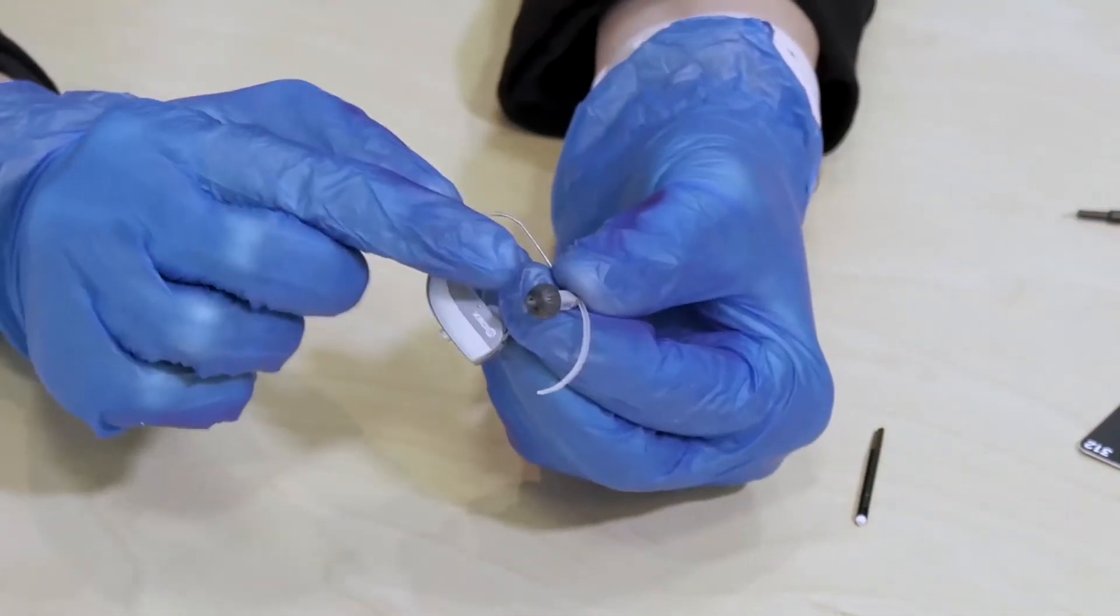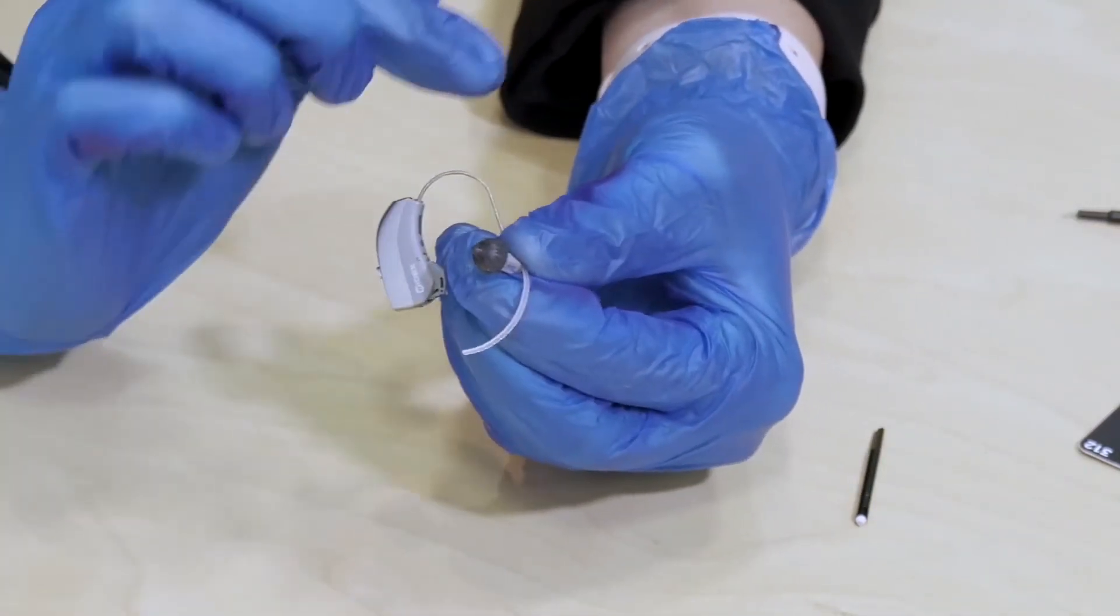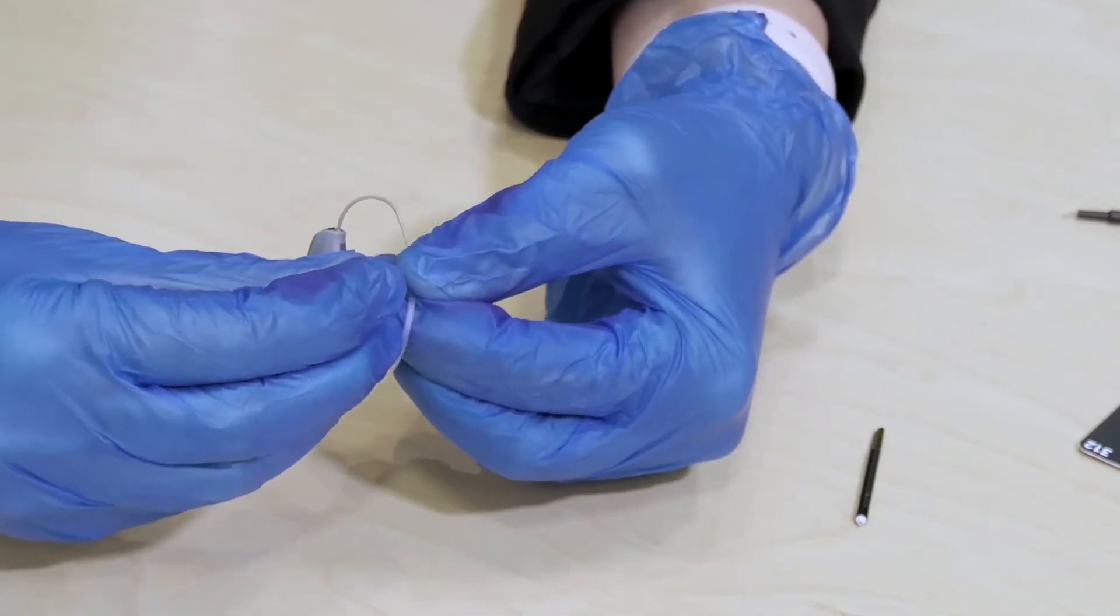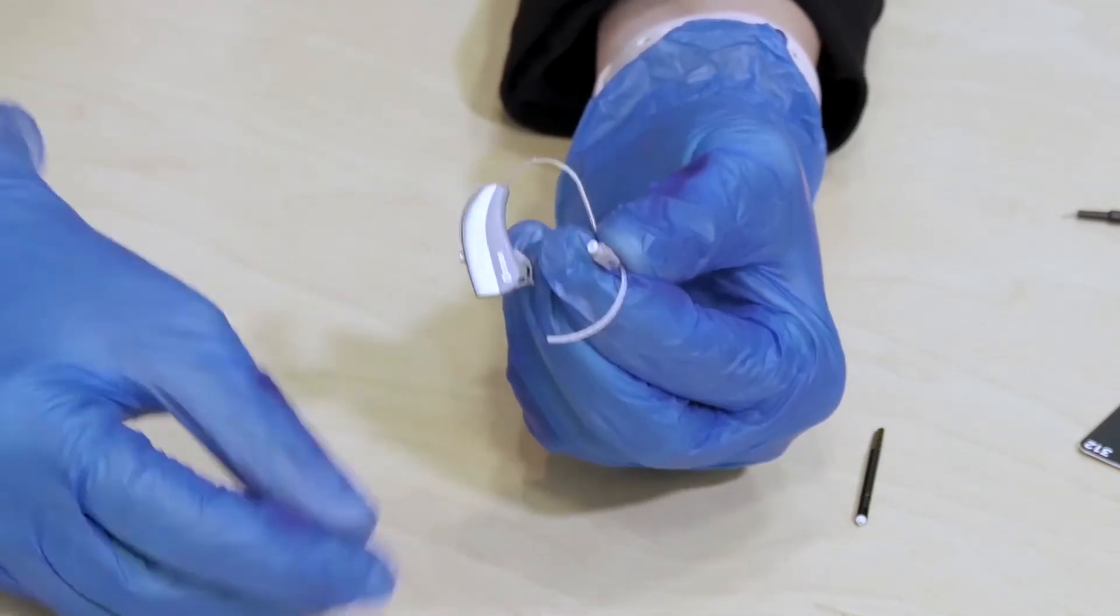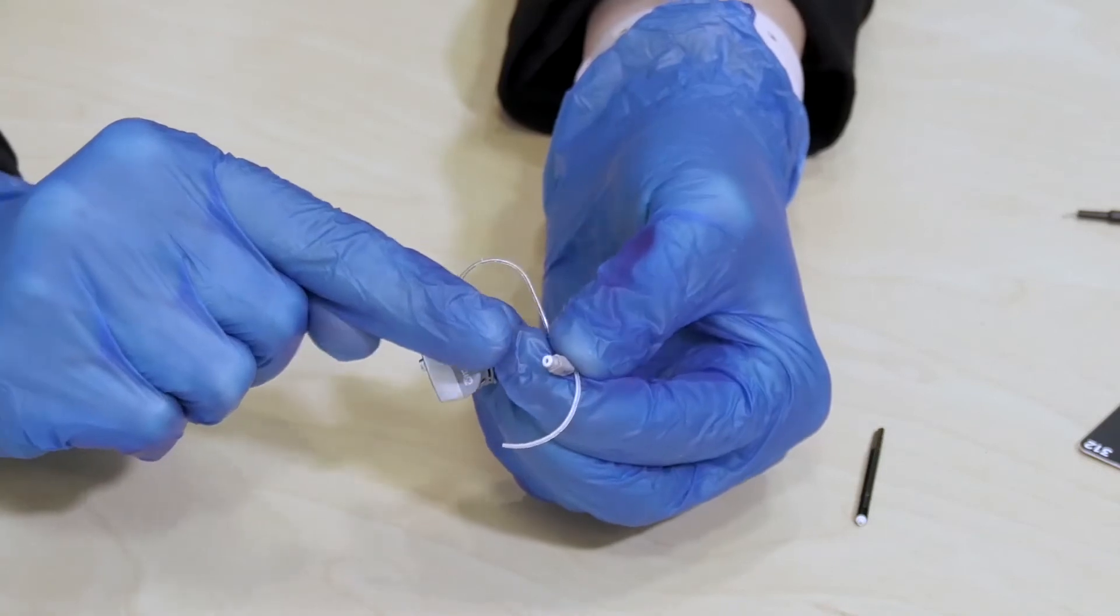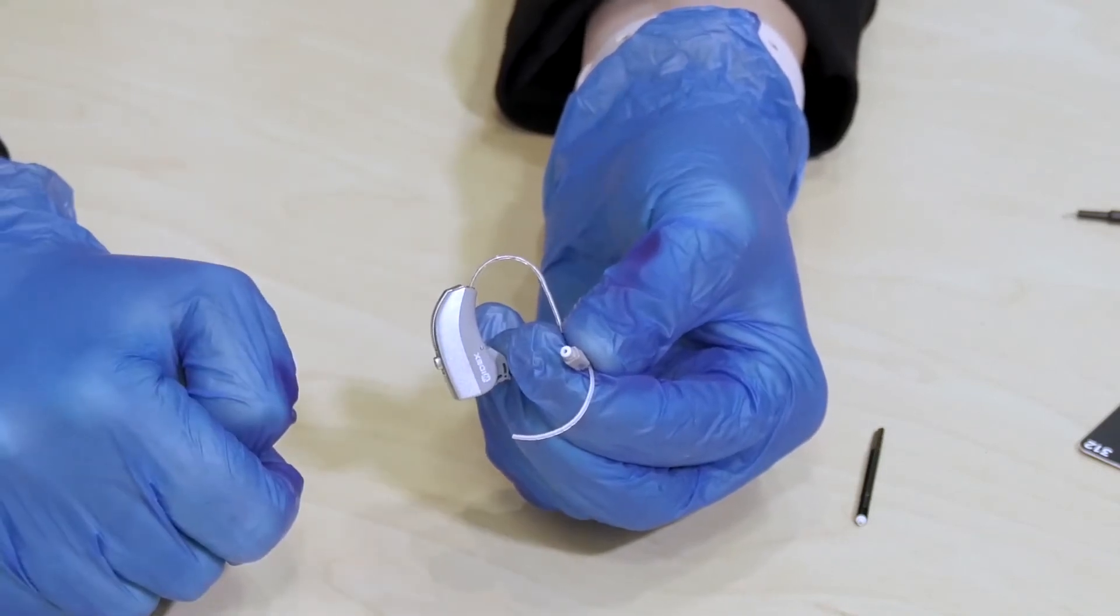Now on these ones you have this little dome that's on the end. To get to where the wax filter is you first need to pull off the dome that sits on the end to locate the old wax filter.